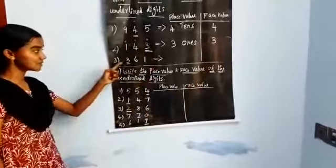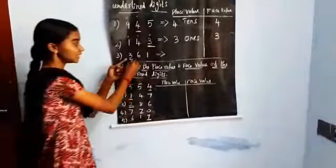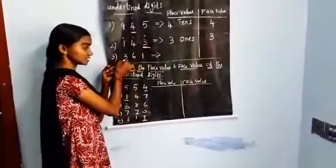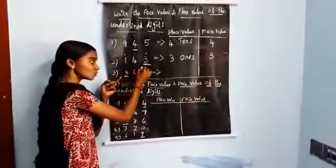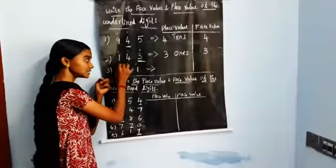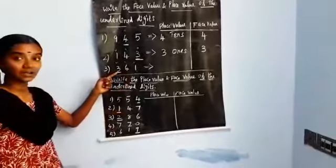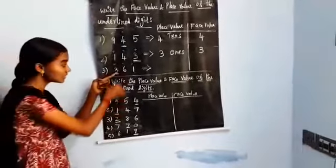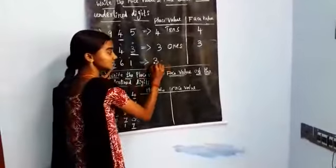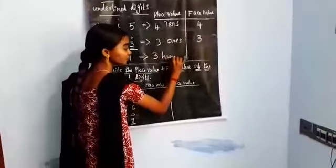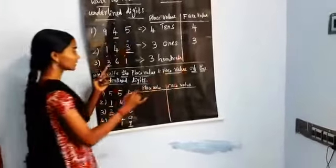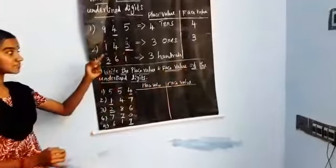Now look at the third example: 316. Which one is underlined? Yes, 3 is the underline. The positions are 1s, 10s, 100s. Here it is in the 100s place. So you write 3 hundreds, or 300. This is the place value.